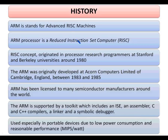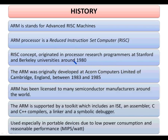ARM is a short acronym for Advanced RISC Machine. The name itself suggests that it is a RISC processor, i.e. Reduced Instruction Set Computer. The RISC concept was introduced by research programmers at Stanford and Berkeley University around 1980. The Acorn Computer Ltd took the effort to develop the ARM processor between 1983 and 1985. After that, ARM started to license its core to many semiconductor manufacturers around the world for developing various ARM-based applications.